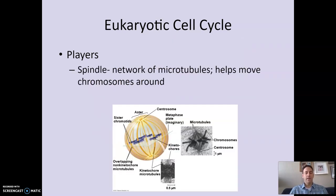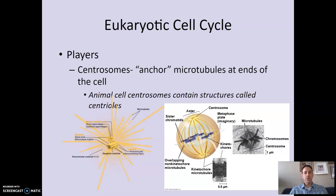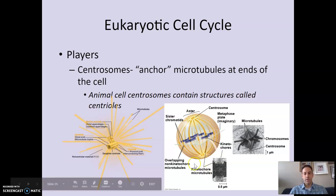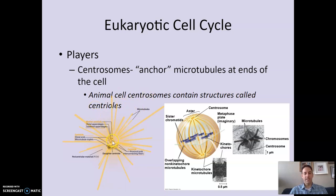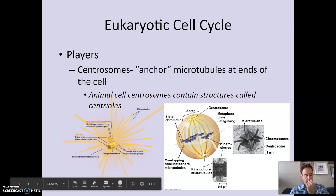The next player is something called a spindle. The spindle is a network of microtubules — protein fibers you can see as thread-like lines — that help move chromosomes around the cell. The centrosomes anchor the microtubules at each end of the cell, with spindle fibers radiating outward. Animal cells also contain structures called centrioles — cylindrical structures at the ends of the cell — whereas plant cells don't have centrioles.